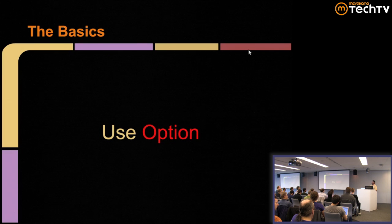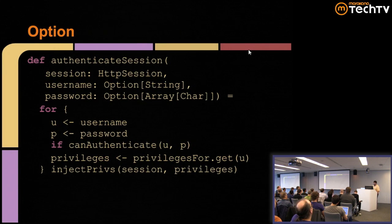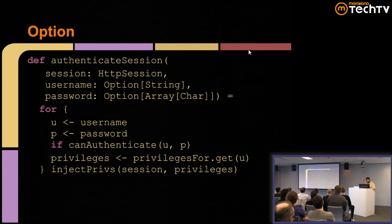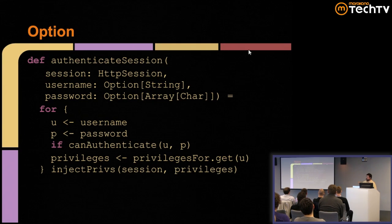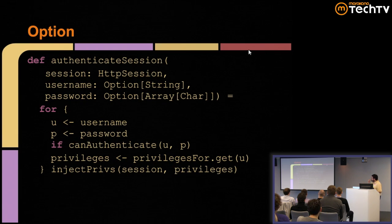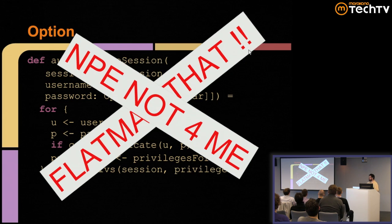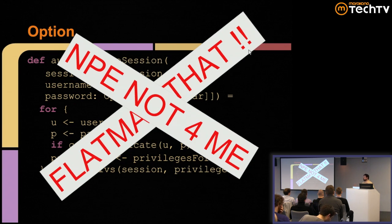Use Option. Don't use null. If I'm authenticating a user on a web framework, I can take in Options and have my code still be nice and simple using for-expressions. I can pull out the username from the option, pull out the password, and authenticate only if these things are there. I can use getOrElse to delay explosions. Flat map it, and NPE is not for me. Let's use Option to avoid null pointer exceptions. In Scala, there should be no reason to use null for a non-initialized value.